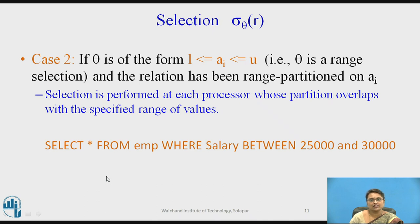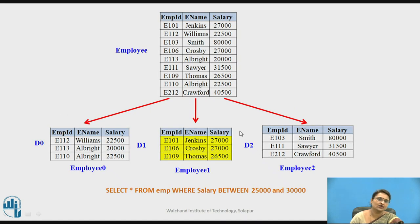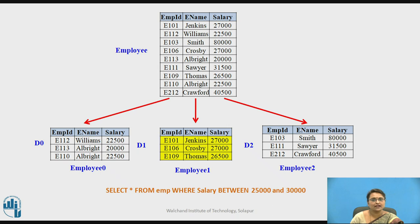The second case is the range query. The theta condition is: Ai >= lower_value AND Ai <= upper_value. For example, SELECT * FROM EMP WHERE salary BETWEEN 25,000 AND 30,000. This corresponds to the second disk range. It directly goes to that disk and retrieves the value, since the range of that disk is more than 25,000 and less than 30,000. As partitioning is applied, unnecessary checking of disks D0 and D2 is avoided — only the disk where the data is available is accessed.